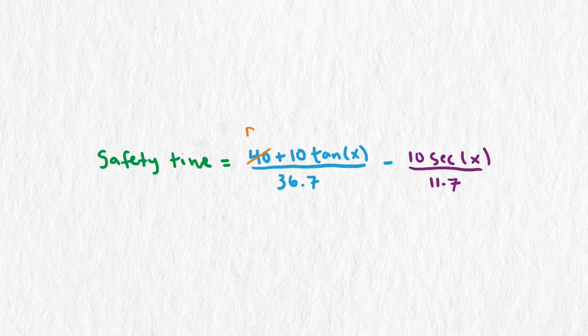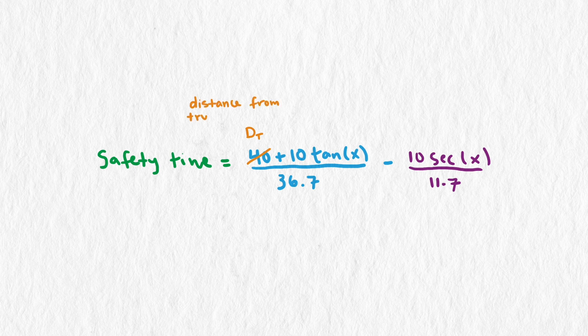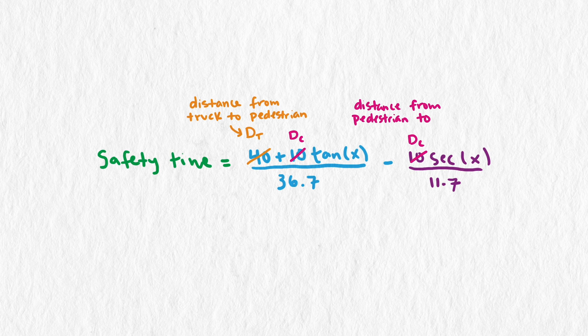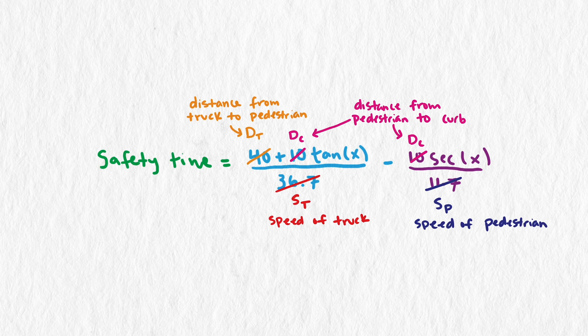But in this video, let's make that model more general by working with some arbitrary values for speeds and distances. This is a typical approach when working with a mathematical model. It helps us better understand the real-world phenomenon occurring. This approach has some advantages. We'll discuss those as we go through the problem.